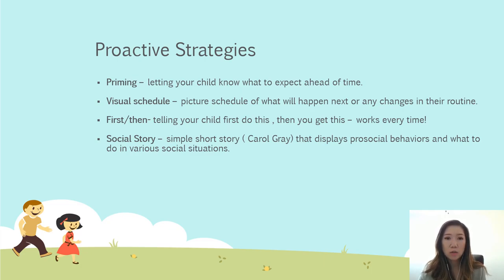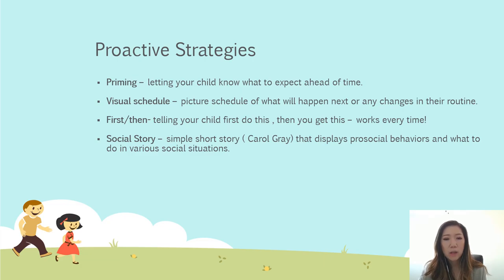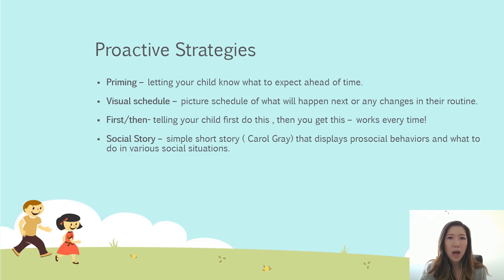A visual schedule is a picture schedule you can create or purchase — Melissa and Doug makes a schedule board with different activities you can put on it. You can also print a permanent schedule if your routine is the same every day, like morning and night routines. The first-then strategy is great as well — tell your child what to do first, which is a non-preferred activity, then they get something preferred after. It's simple: 'First this, then you get this.' Social stories, created by Carol Gray, display pro-social behaviors in a kid-friendly story format.